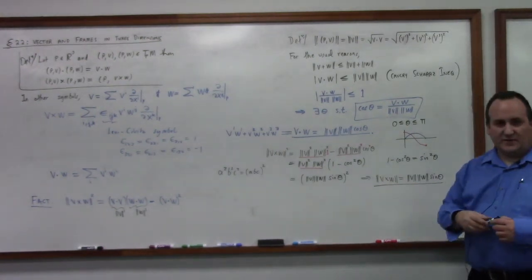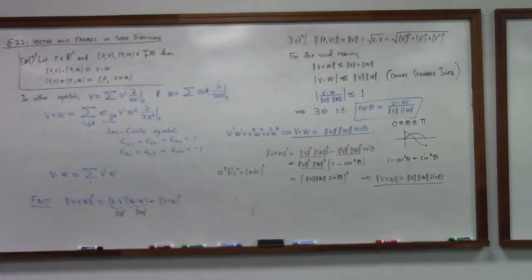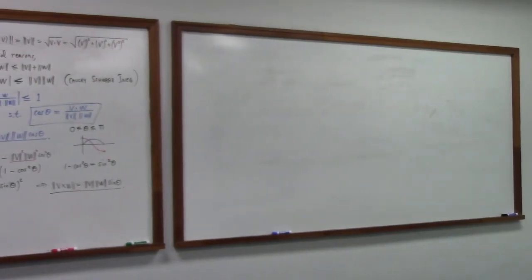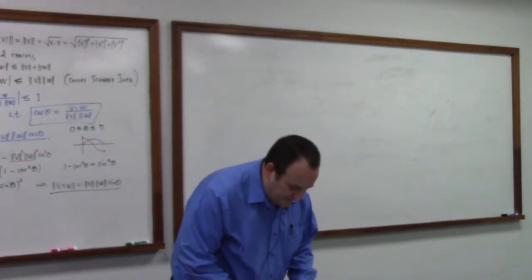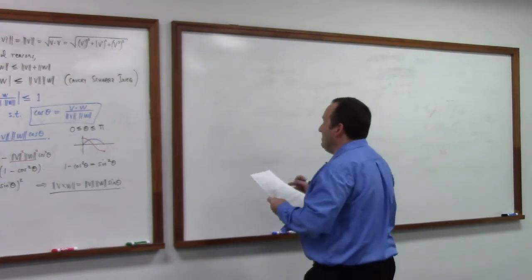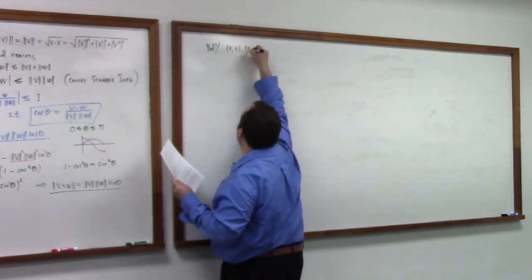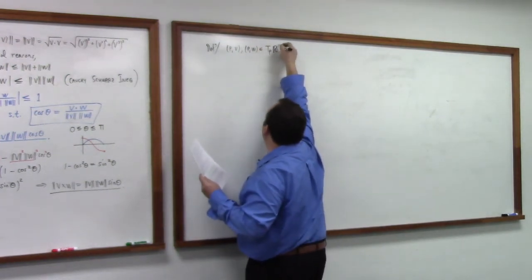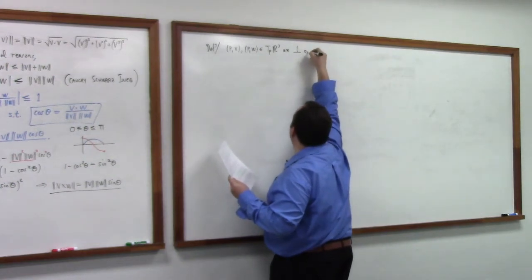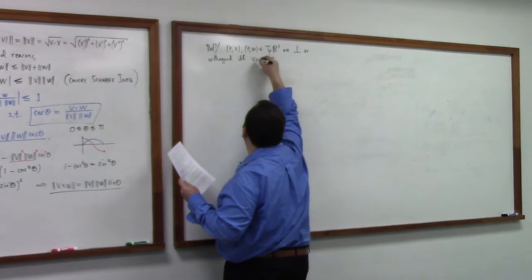Okay so next up I define orthogonal vectors. What does it mean for vectors to be orthogonal? If and only if v dot w equal to zero. All right.